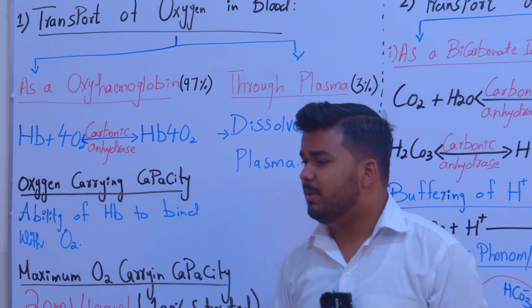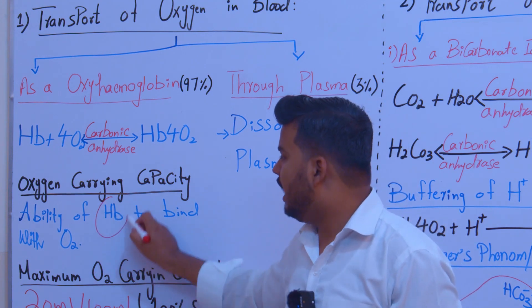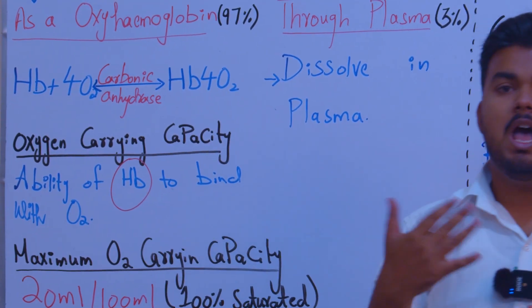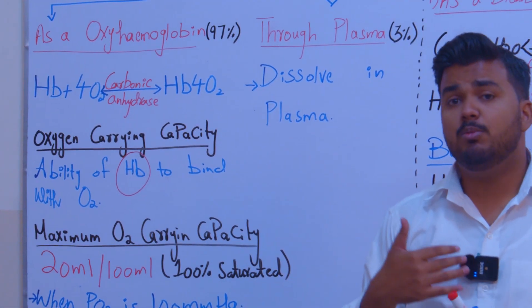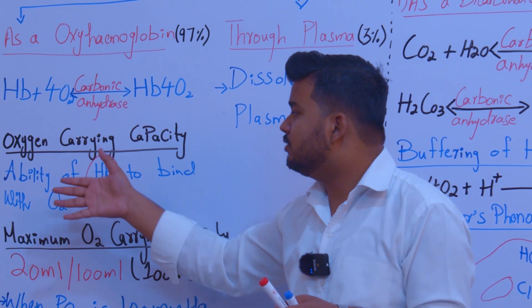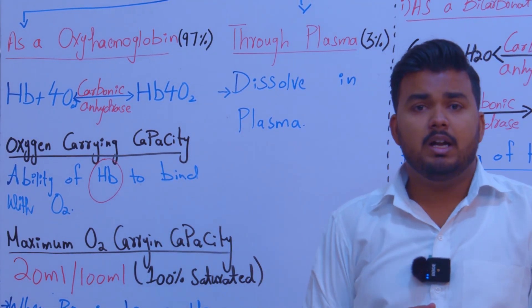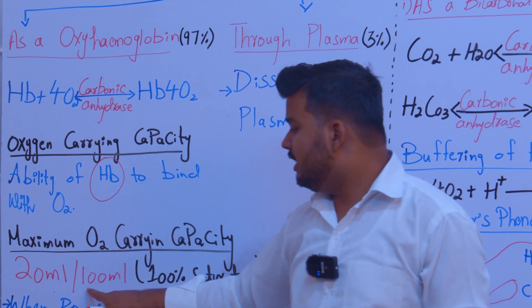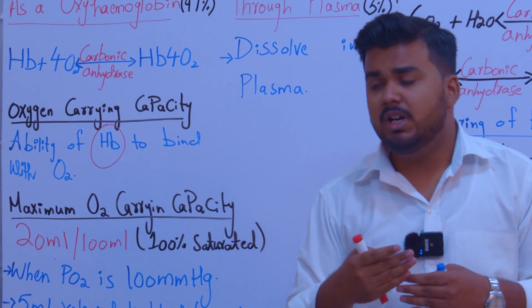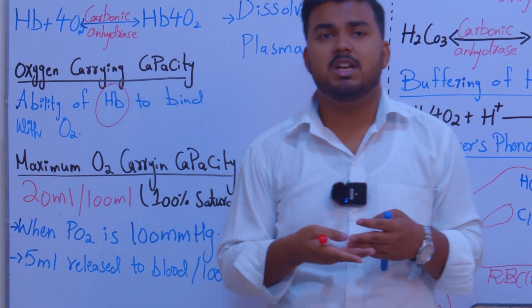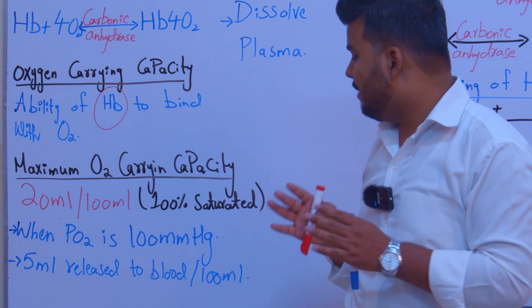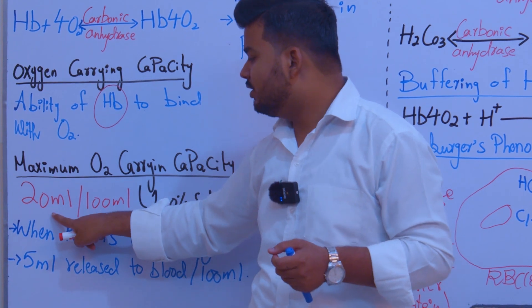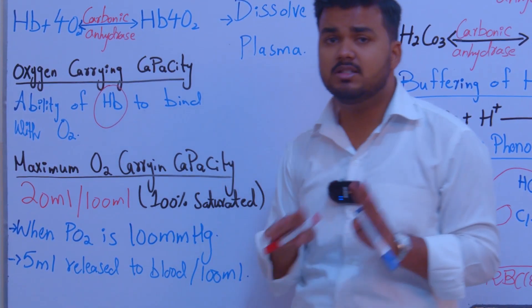There is a term called oxygen carrying capacity, which means how much oxygen hemoglobin in your blood can bind. This is the oxygen carrying capacity of hemoglobin. The maximum oxygen carrying capacity in the blood is 20ml of oxygen per 100ml of blood, and this represents 100% saturation.